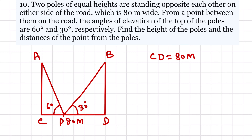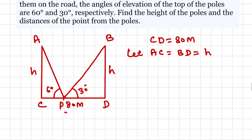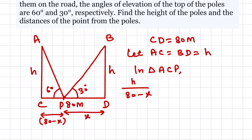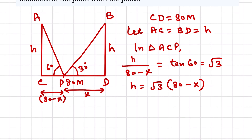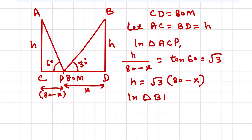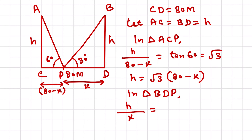Find the height of the poles. Let AC = BD = h. Let PD = x, so PC = 80 - x. In triangle ACP, h upon (80 - x) equals tan 60°, which is root 3. So h = root 3 × (80 - x). In triangle BDP, h upon x equals tan 30°, which is 1 over root 3, so x = root 3 × h.